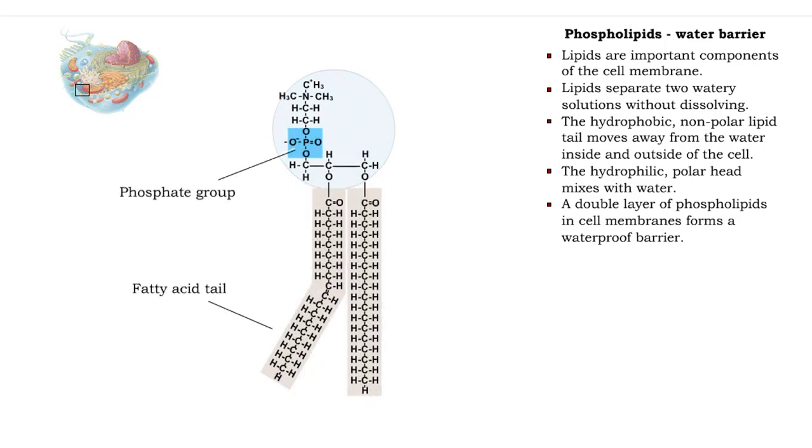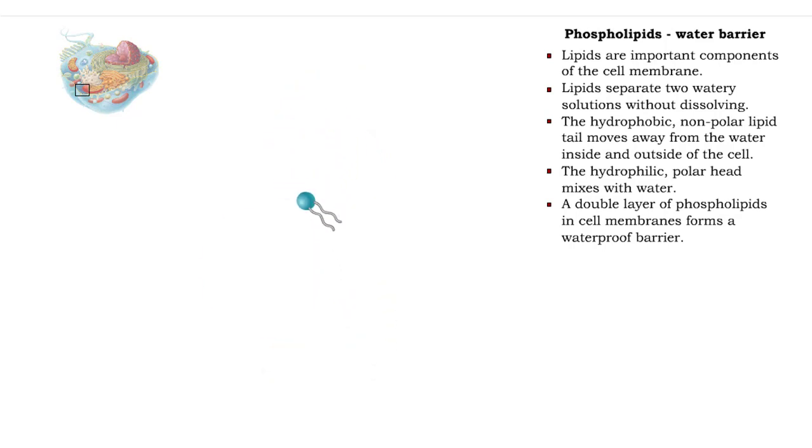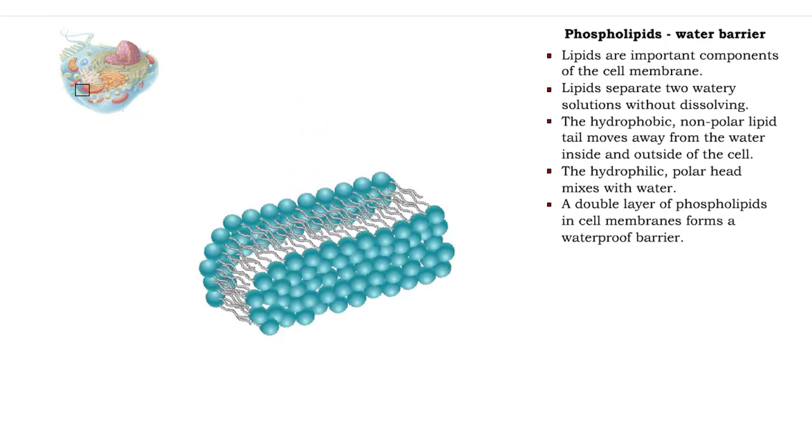The nonpolar lipid end moves away from the water. It is hydrophobic, or water-hating. A bilayer of phospholipids, with their tails entwined, forms a waterproof barrier for the cell membrane.